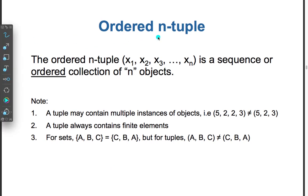Ordered tuple: An ordered n-tuple (x1, x2, x3, ..., xn) is a sequence or ordered collection of objects. Note that a tuple may contain multiple instances of an object. For example, (5, 2, 2, 3) does not equal (5, 2, 3).